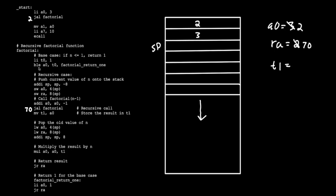We set T0 to 1 and perform the test again: is A0 less than or equal to 1? No, it's 2. So we decrement the stack pointer by 8 bytes — stack pointer comes right here. We store the new A0 into stack pointer with an offset of 4 bytes, and we store the return address at stack pointer with an offset of 8 bytes, so RA address 70 goes up here. Now we continue to our next recursive call, subtracting 1 from 2, so A0 becomes 1, and we jump and link — RA is set to 70 again.